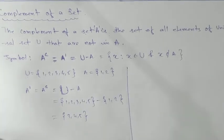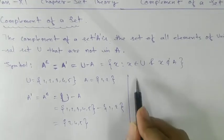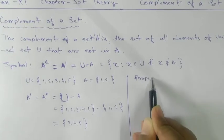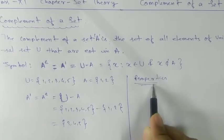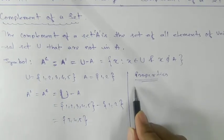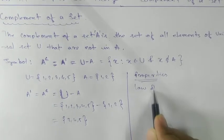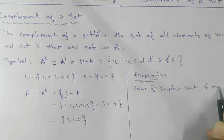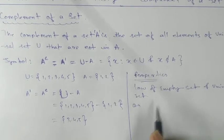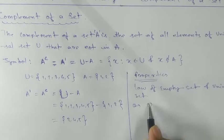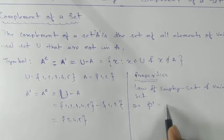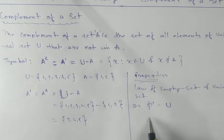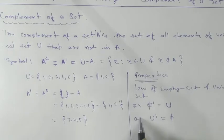We have properties. Let's see the first one: the law of empty set and universal set. Complement of the empty set will always give you the universal set, and complement of the universal set will always give you the empty set.